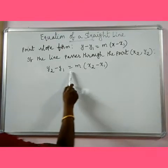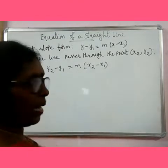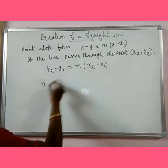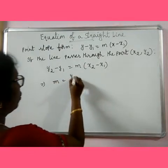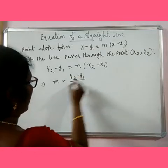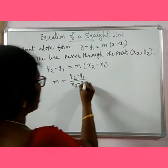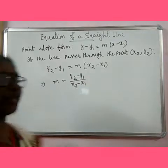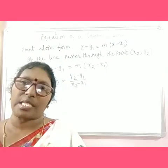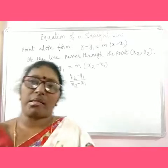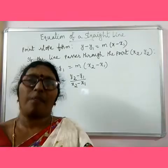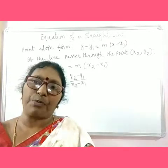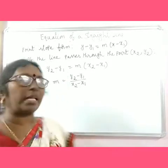If the line is passing through point x2, y2, then y2 minus y1 equal to m into x2 minus x1. This implies m is equal to y2 minus y1 by x2 minus x1. That means the slope of the line is the difference of y coordinates divided by difference of x coordinates. So if you know the coordinates of two points of a line, you can find the slope using this formula.